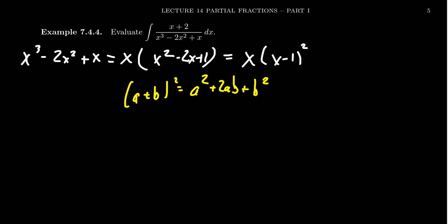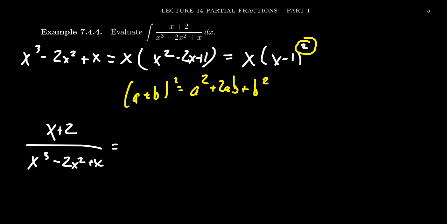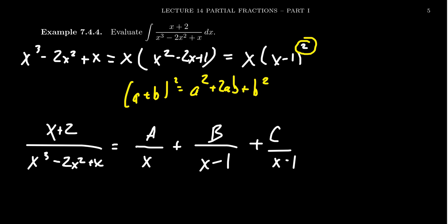Notice in this example that the denominator has a repeated root — x-1 shows up twice. How does this affect the template of the partial fraction decomposition? It has a big impact. Because we have x in the denominator, we need a term a/x. For the x-1 factor, we might be tempted to write b/(x-1) and c/(x-1), but this doesn't work — the least common denominator would only be x(x-1), not x(x-1)².